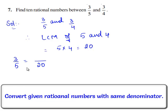Therefore 3 by 5 can be written as with denominator 20, 5 times 4 is 20 and 3 times 4 is 12. Therefore 3 by 5 is equal to 12 by 20.